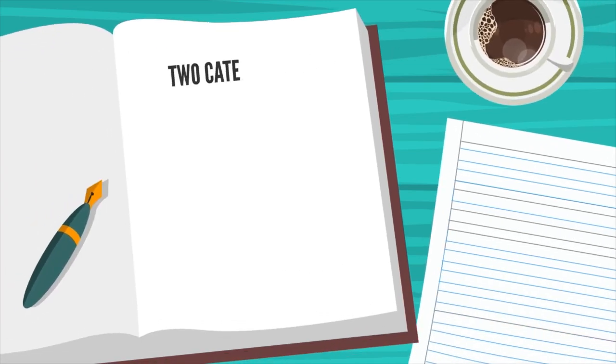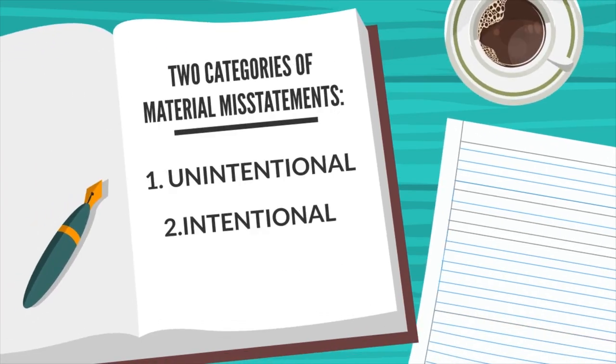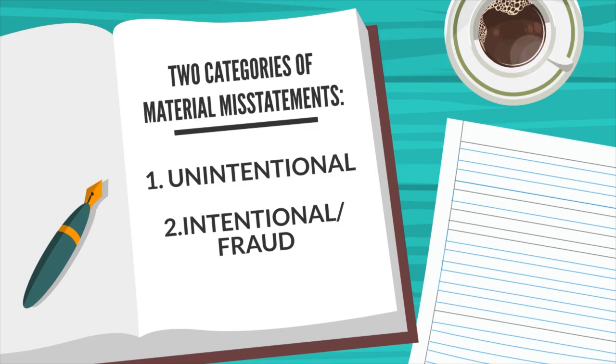Basically, there are two categories of material misstatements: one is unintentional, and the other is intentional, which is also known as fraud. In the video cases presented, you will be able to see both intentional and non-intentional misstatements. Do enjoy, and hopefully you learn something from the video cases. Thank you.